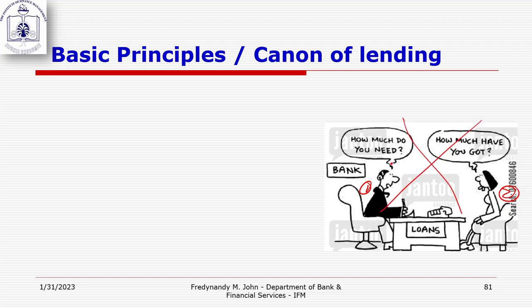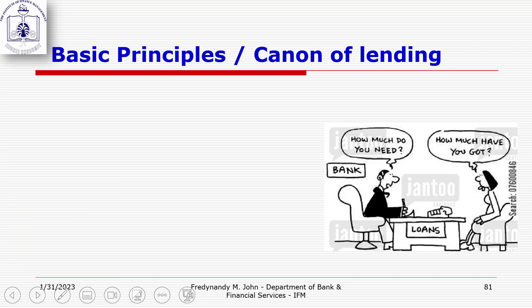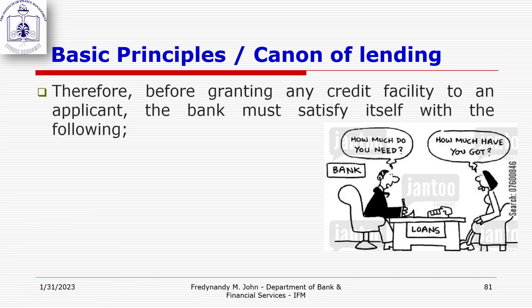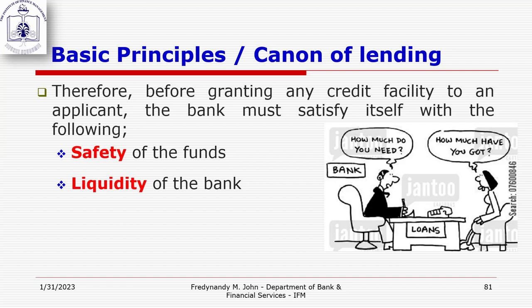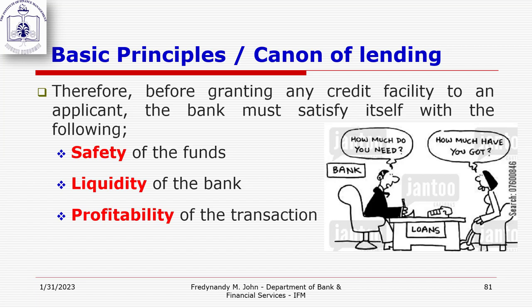Before you grant any credit facility, you need to ensure that the following conditions are satisfied — these are the principles or canons of lending. Number one: safety of the funds. Number two: liquidity of the bank. Number three: profitability of the transaction, where the transaction in question is the loan or credit facility.